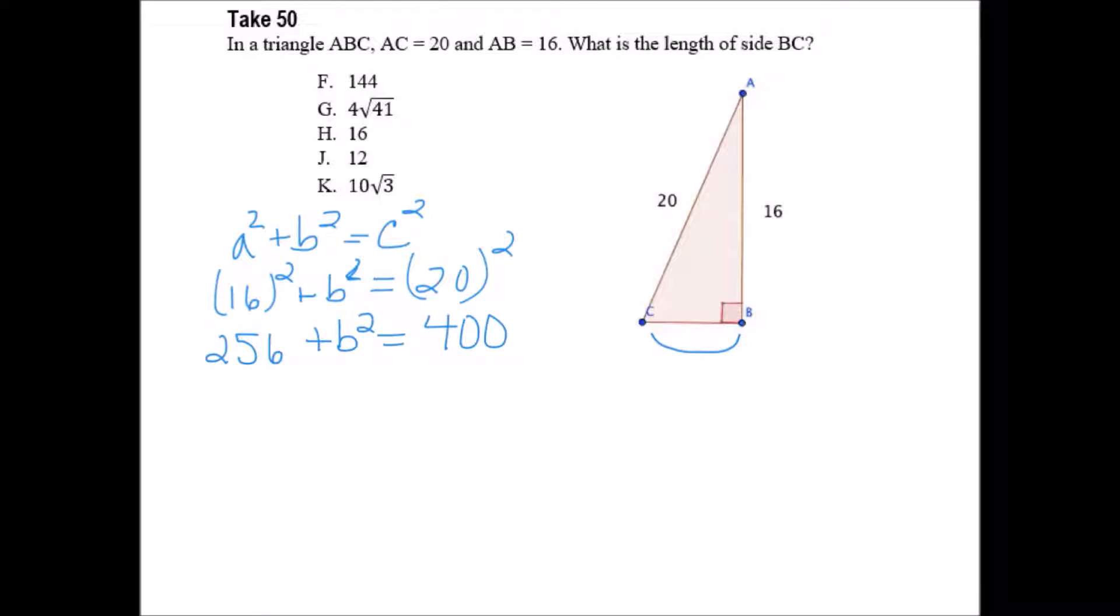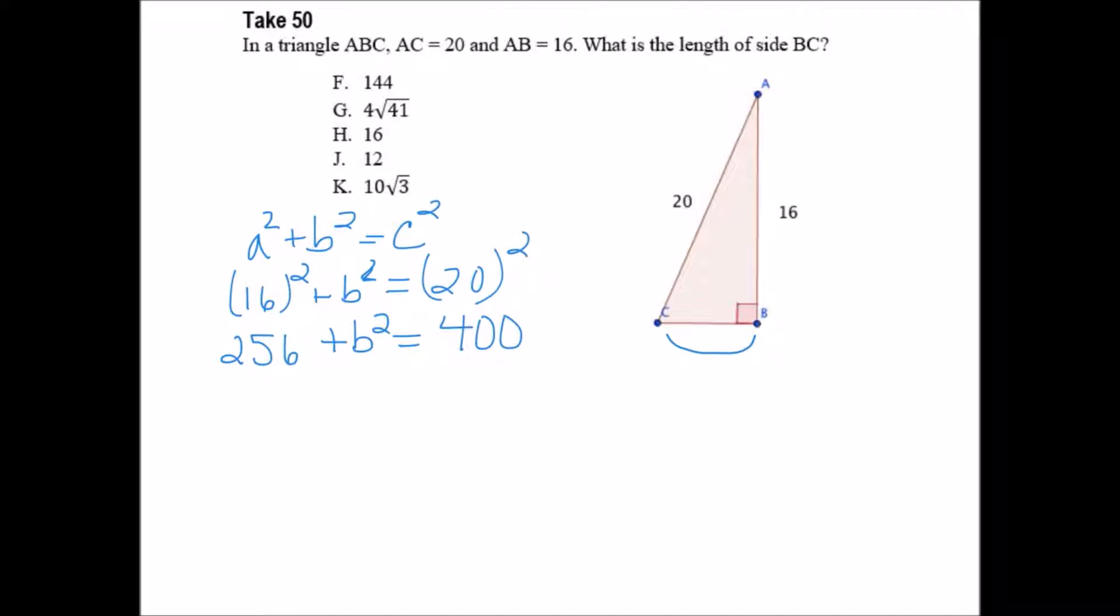Now, to solve for B squared, we subtract 256 from both sides. These cancel out, leaving B squared equals 144, or B equals the square root of 144.